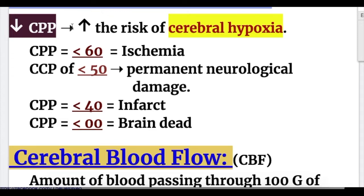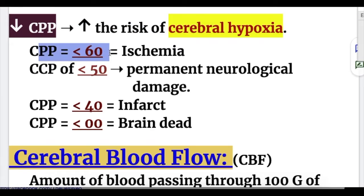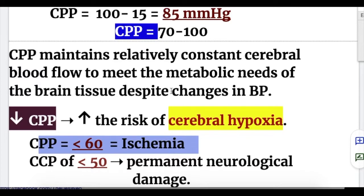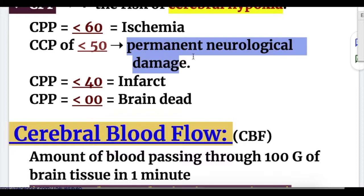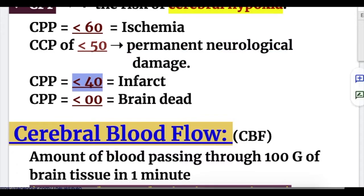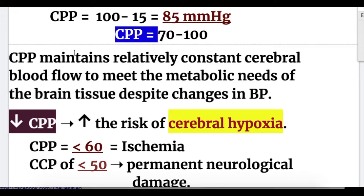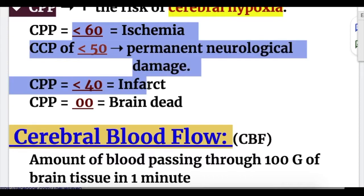If there is a decrease in cerebral perfusion pressure, it increases the risk of cerebral hypoxia. If CPP is less than 60 — normal is 85 — it causes ischemia. When CPP is less than 50 it causes permanent neurological damage, less than 40 it causes infarction, and if 0 it causes brain death.